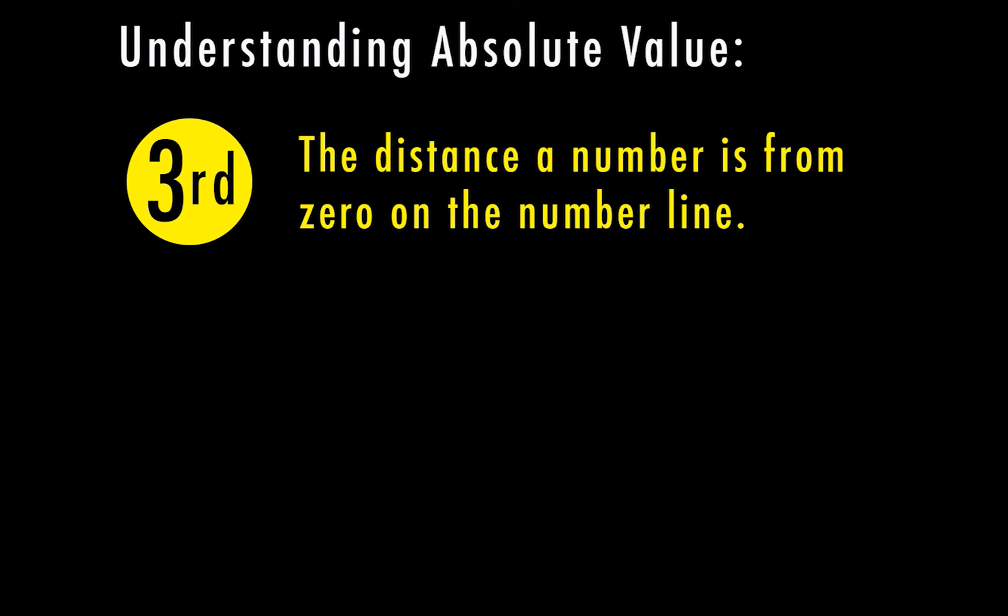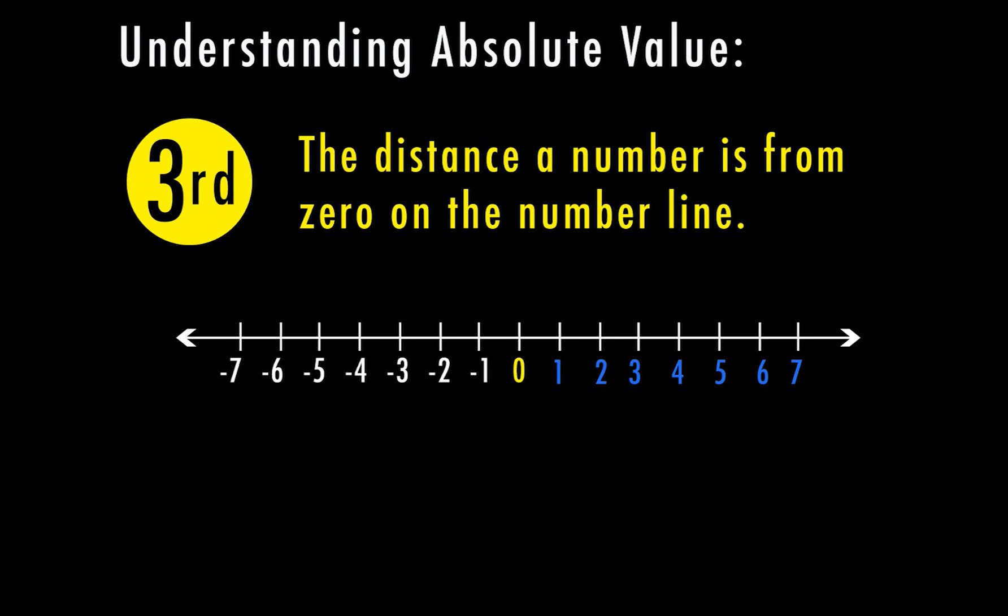Now we're going to use this information to understand absolute value. Absolute value means the distance that a number is from zero on the number line. It doesn't matter if it's positive or negative — all we're measuring is the actual distance. Think about absolute value as distance: if you're going five miles across town, you drive to the store five miles and then turn around and drive back. You don't drive backwards. So negative numbers are not part of an absolute value answer — it's just a number representing that distance.